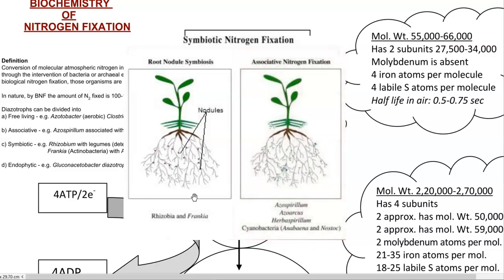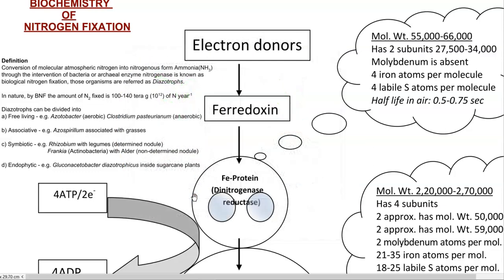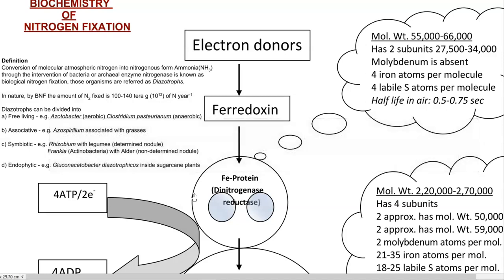Then comes symbiotic nitrogen fixation. The difference between symbiotic and associative is that symbiotic organisms are strictly in association with the plant system, whereas associative organisms can sometimes be entirely free-living. In the symbiotic group, two different types of nodule structures can be formed. Rhizobium is a nitrogen-fixing organism found commonly in pulse crops and can form nodules, where it lives and fixes nitrogen. It gets carbon, vitamins and other nutrients from the plant system, while the plant provides shelter. In turn, the plant gets the nitrogen fixed by the rhizobium as ammonia, which can then be used by the plant.